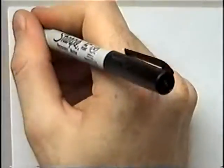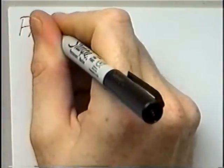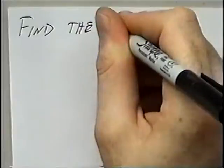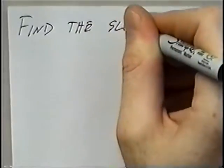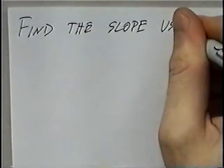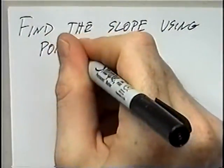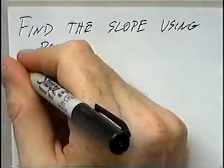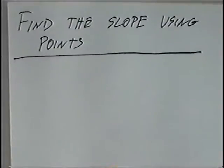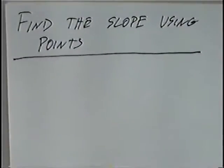The title of the first section today is Find the Slope Using Points. In this section we'll graph two points and find the slope between them.